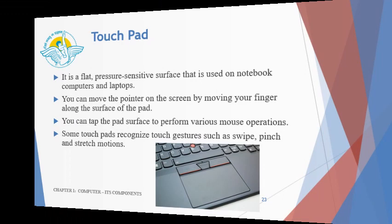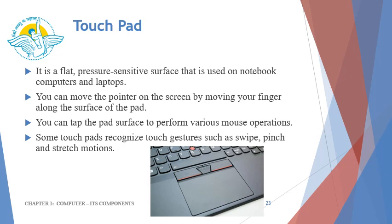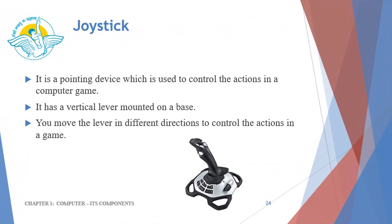A touchpad is another input device. It is a flat, pressure-sensitive surface used on notebook computers and laptops. You can move the pointer on the screen by moving your finger along the surface of the pad, and you can tap the pad surface to perform various mouse operations. Some touchpads recognize touch gestures such as swipe, pinch, and stretch motions. Joystick is a popular input device used while playing computer games. It is a pointing device with a vertical lever mounted on a base. You can move the lever in different directions to control the actions in a game.